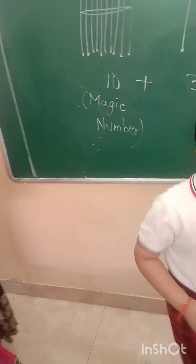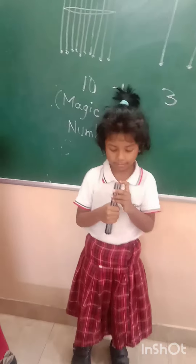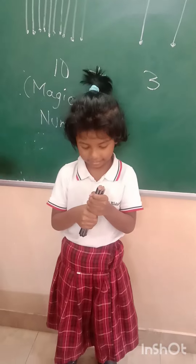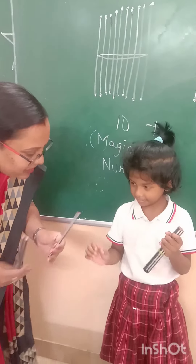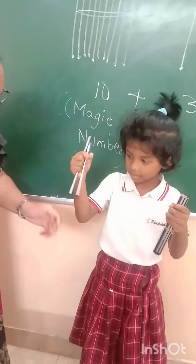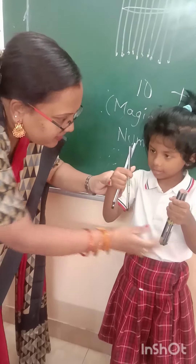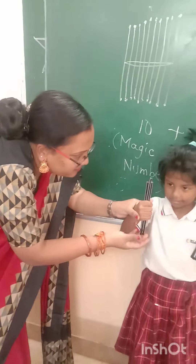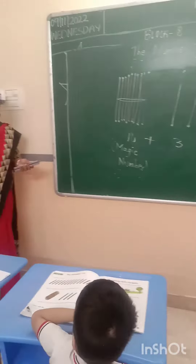Now next — one more girl. Agya, come. Count how many are there: 1, 2, 3, 4, 5, 6, 7, 8, 9, 10. What is 10? Magic number. Show me 11 — 10, 11. Show me 12 — 10, 11, 12. Show me 13 — 10, 11, 12, 13. Show me 13. Yes, very good. Clap hands for Agya. Ready, done.